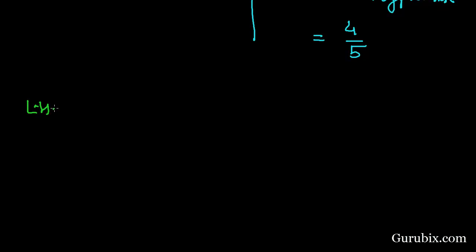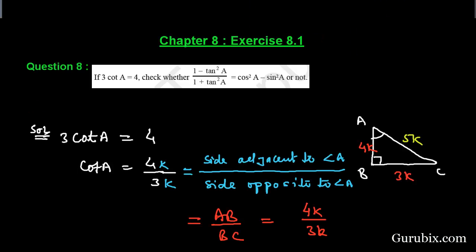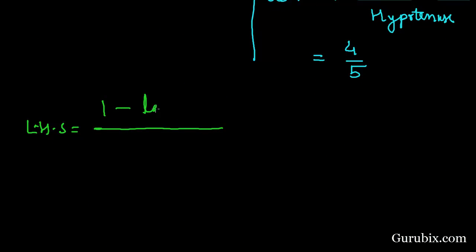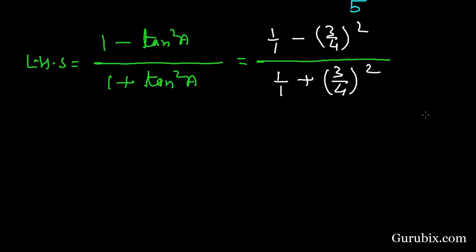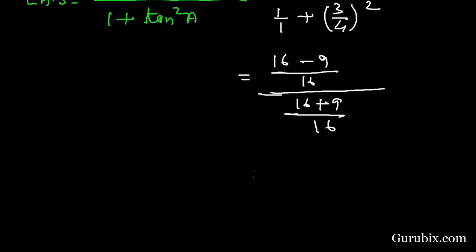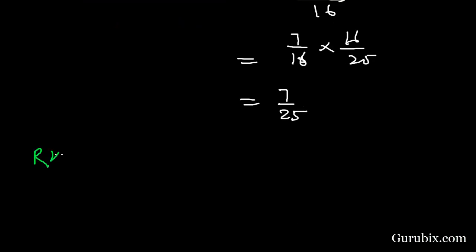Now we shall evaluate the left-hand side: (1 - tan² A) / (1 + tan² A). Substituting tan A = 3/4, this becomes (1 - 9/16) / (1 + 9/16) = (7/16) / (25/16) = 7/16 × 16/25 = 7/25.